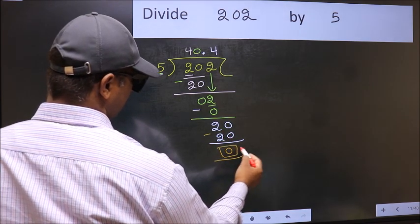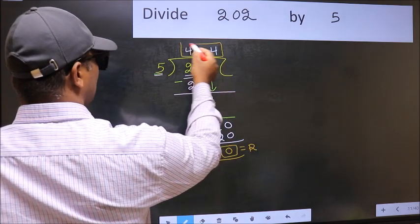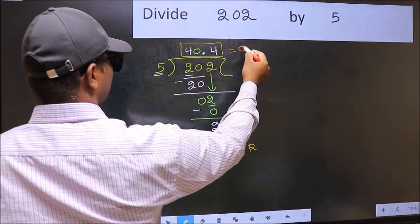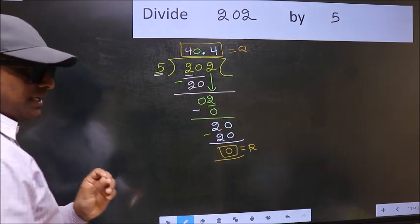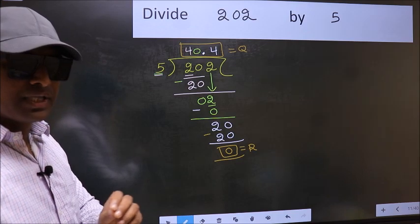So this is our remainder and this is our quotient. Did you understand where the mistake happens? You should not do that mistake.